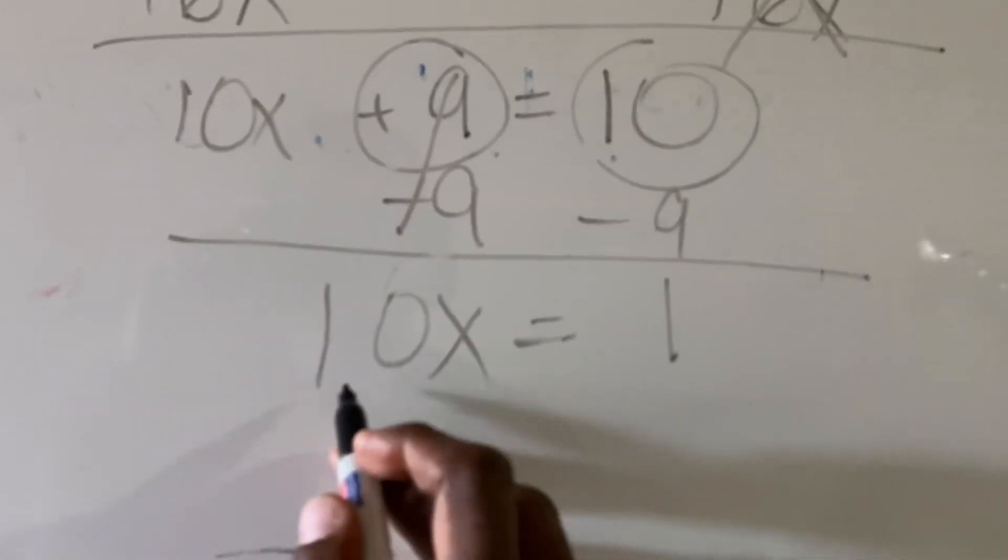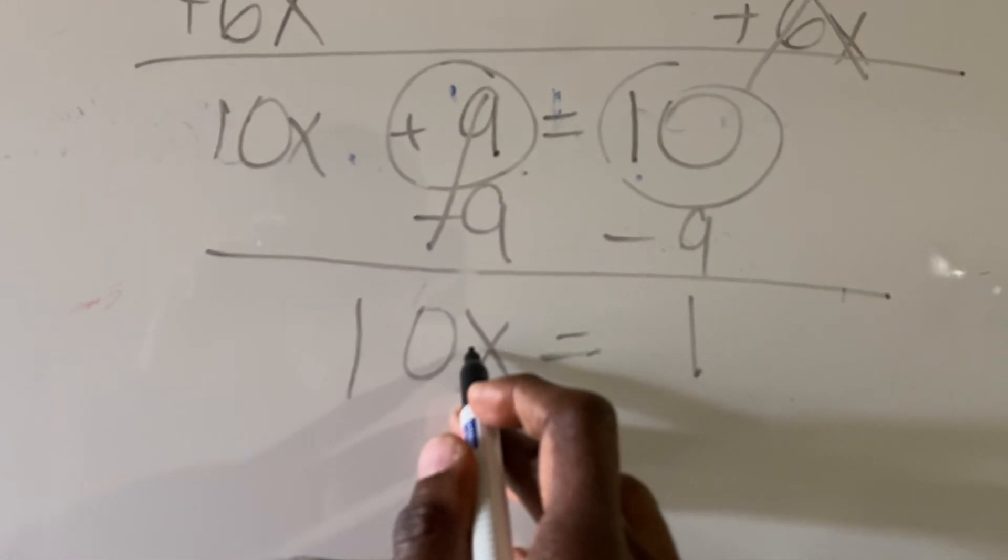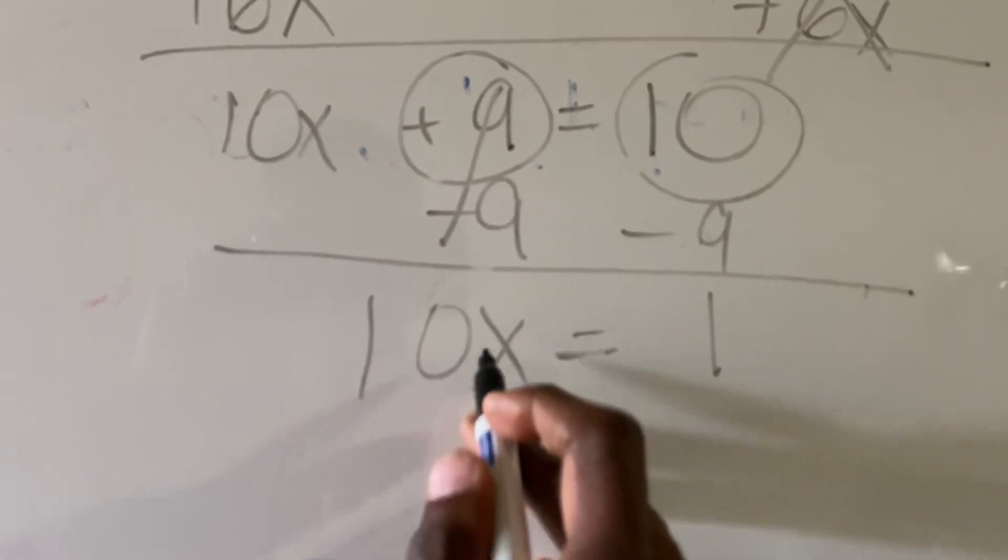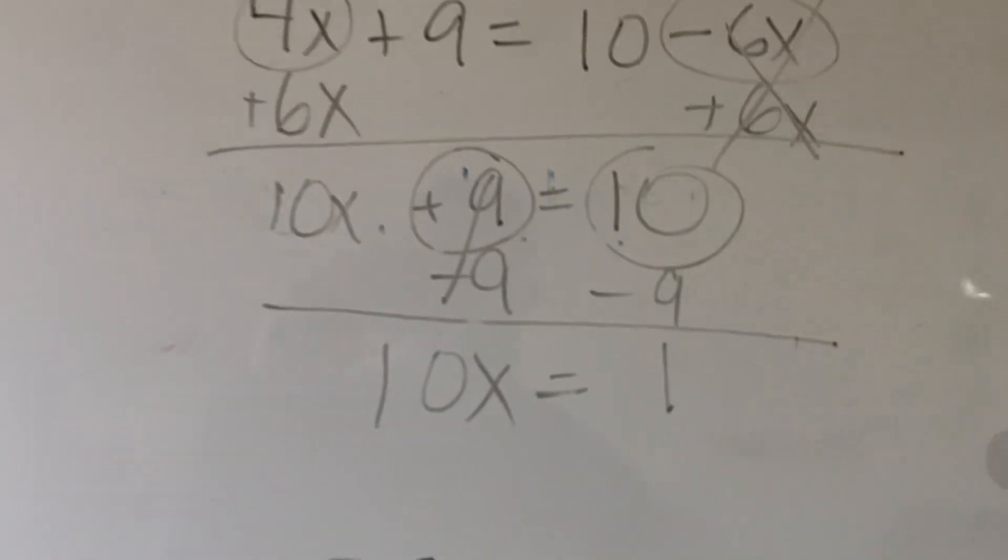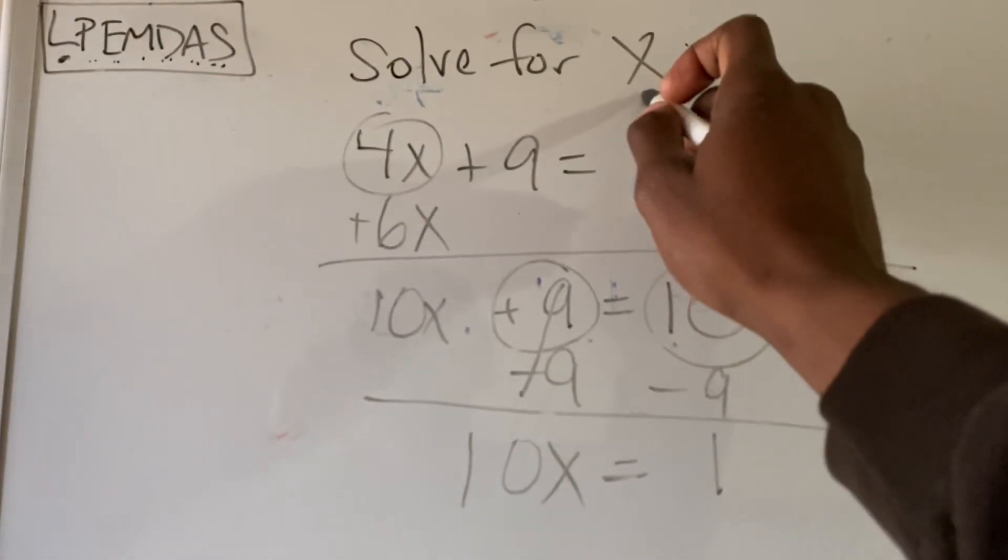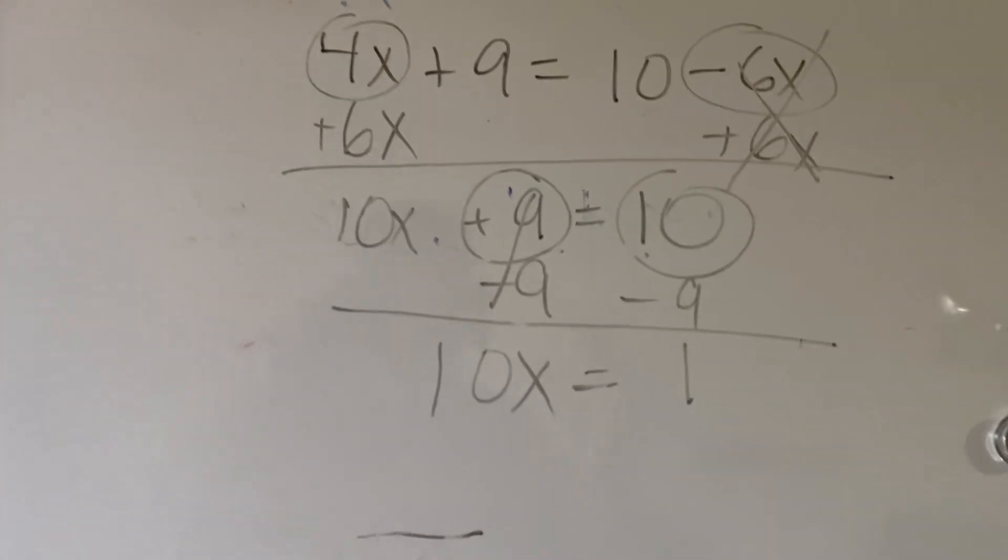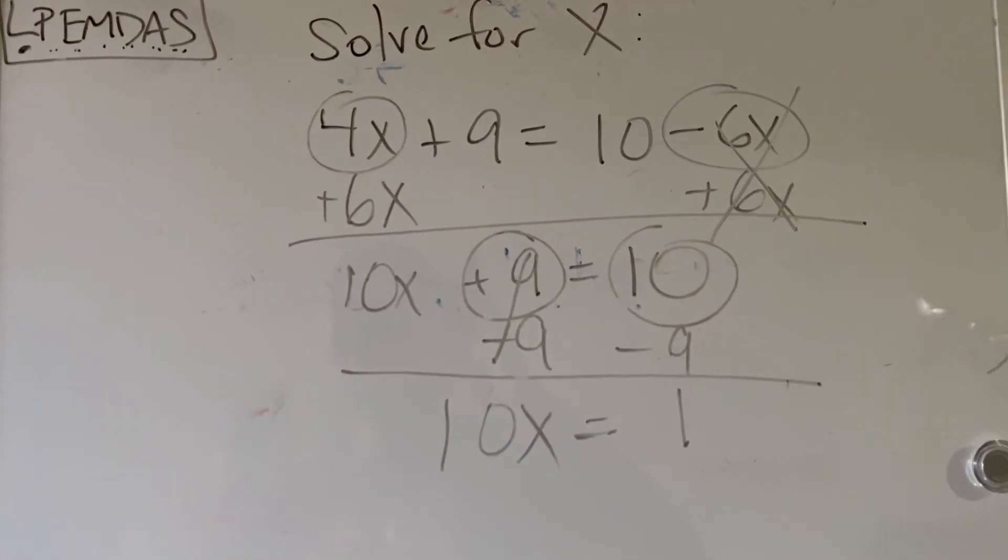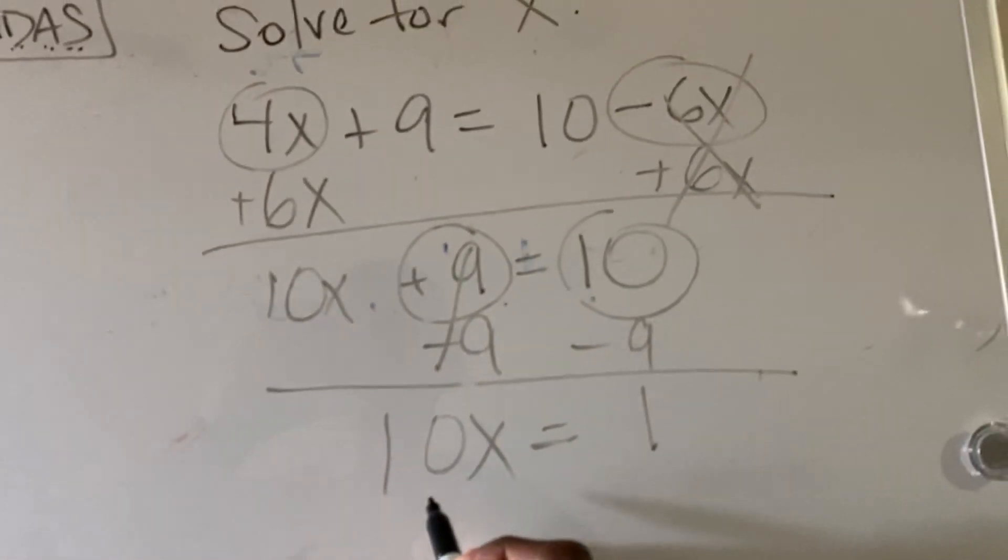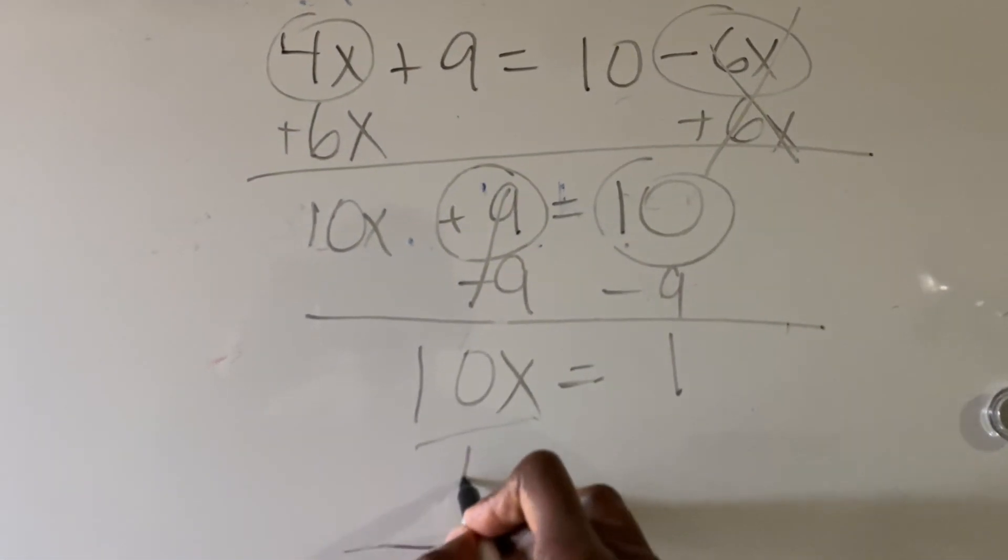Well, you're like, well, where? I don't see a multiplication sign. That's alright. When you have a number directly connected right next to a letter, a variable in other words, that is multiplication. And we want to get x by itself. Remember, solve for x. We want to get x by ourselves, so we're going to use the opposite operation that we see. So we got 10x here. Opposite of multiplication is division.